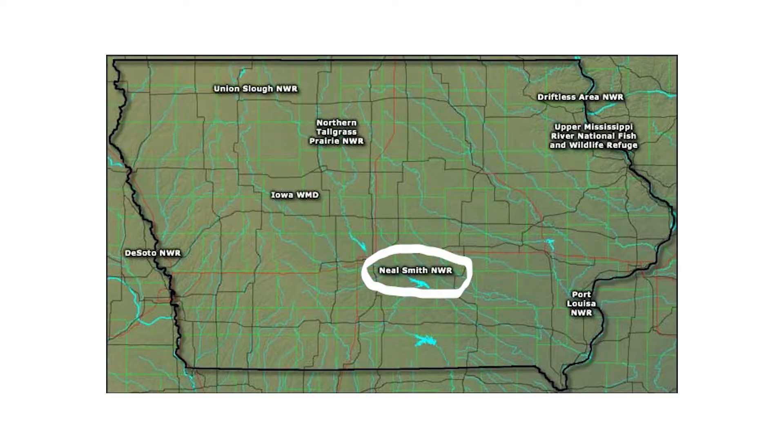We're standing today at one of my favorite places in Iowa, which is the Neal Smith National Wildlife Refuge outside of Prairie City, Iowa. This is a location where the Fish and Wildlife Service has been working to convert former row crop land of corn and soybeans back into native prairie. And this is a really good place to start a discussion about why streams are the way they are.